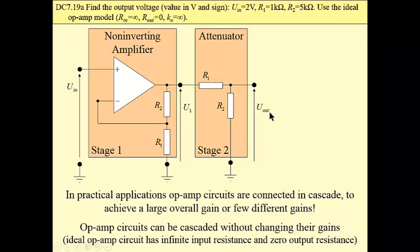And then we have another gain - it is output voltage to input voltage. Please observe that op-amp circuits can be cascaded without changing the gains. This results from an ideal model of op-amp. In this model we have infinitely large input resistance and zero output resistance.